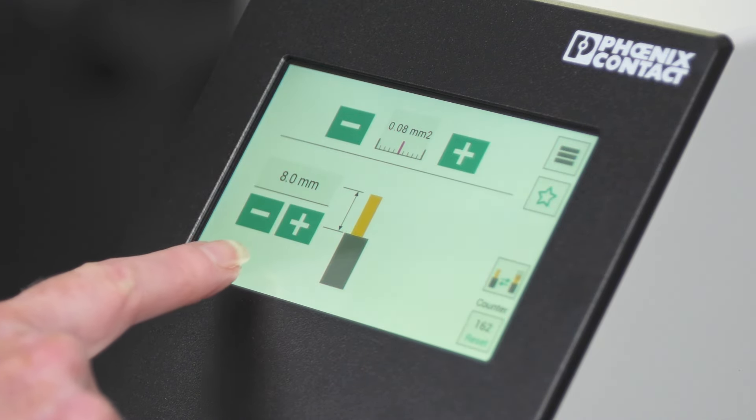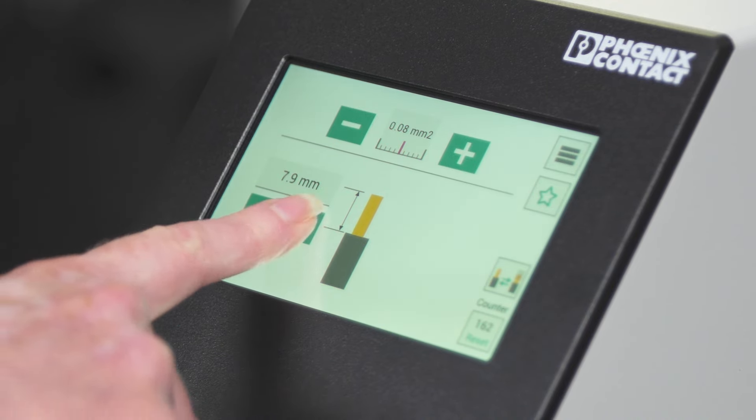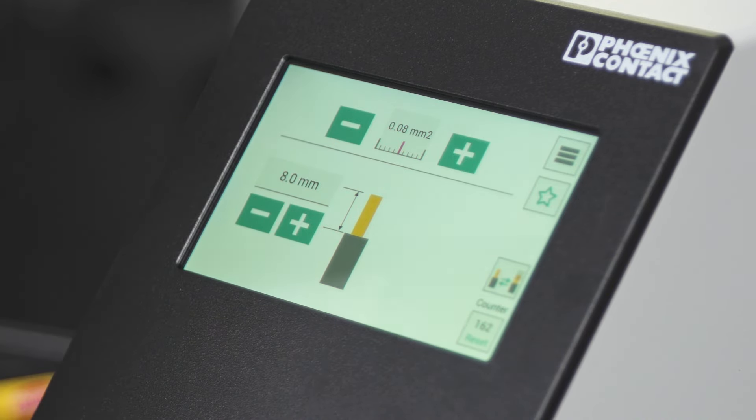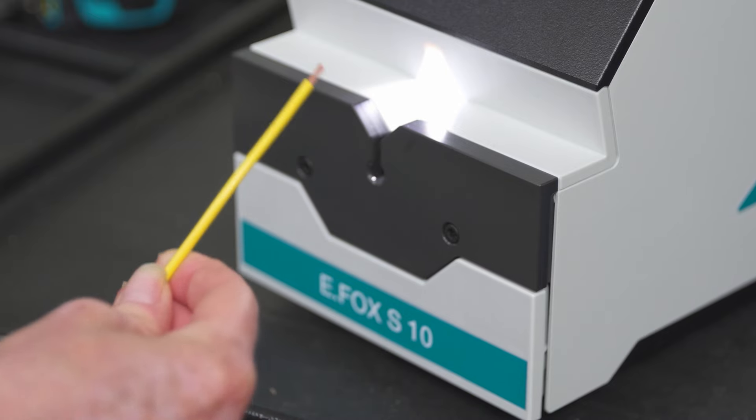Set your correct wire strip length and pull length. Using the plus minus keys, you will hear the machine adjust itself accordingly. Insert your wire at the insertion point where you see the white light.